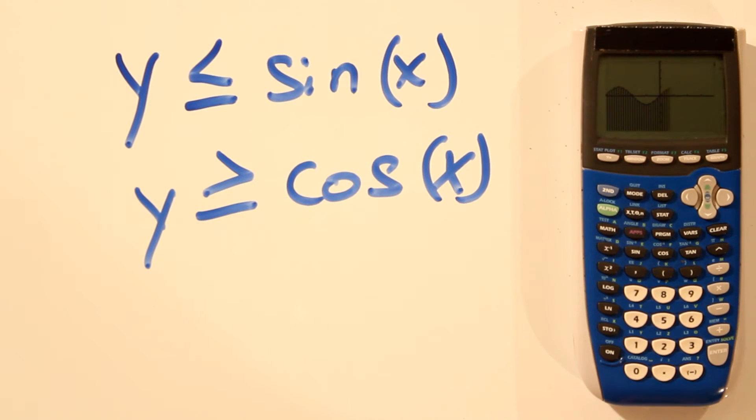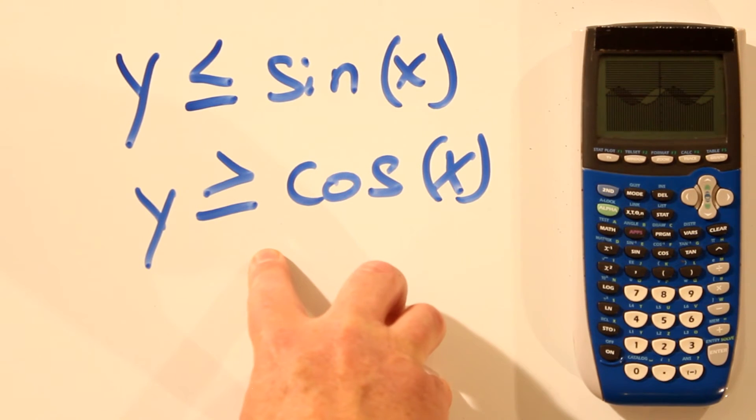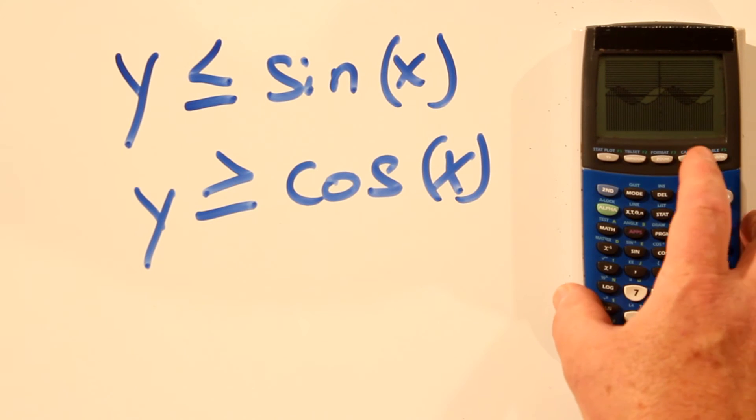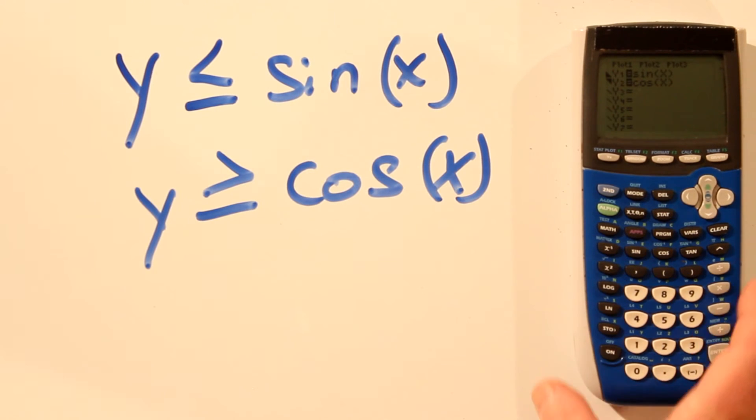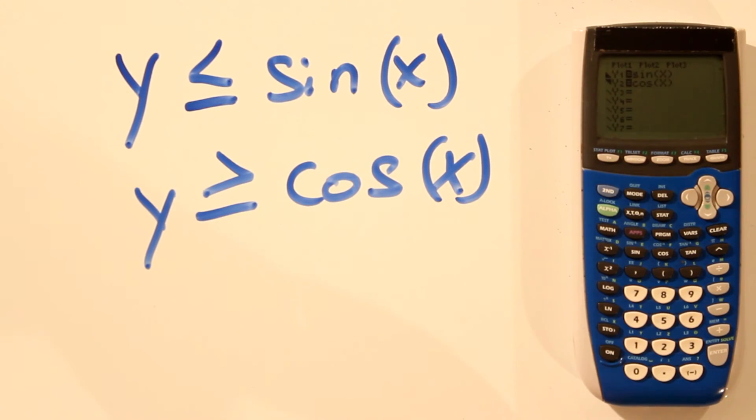There's y less than or equal to sine x. And there's y greater than or equal to cos x. So the greater than or equal to will work with any function that you put in. You just have to check your modes and make sure you're in trig for trig functions or in standard for linear functions. And that's how you can plot greater than or equal to, less than or equal to on your graphing calculator.